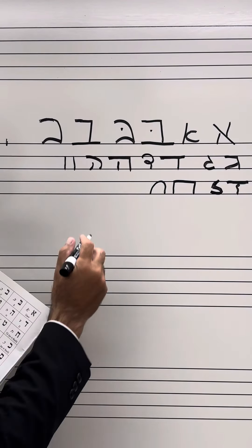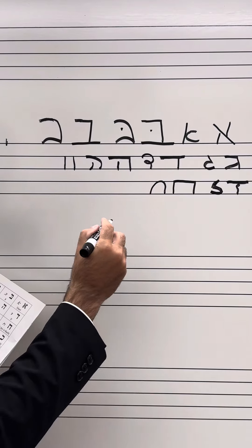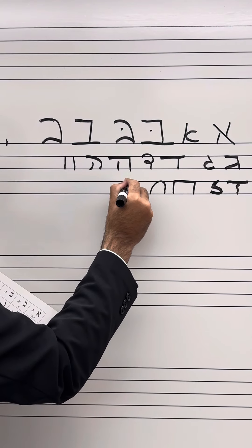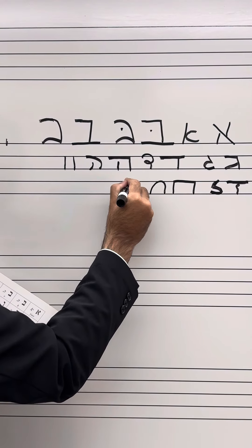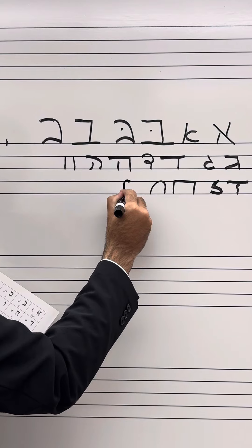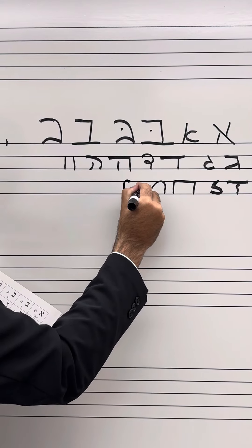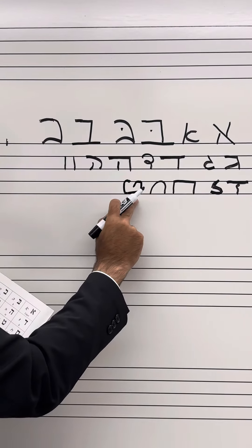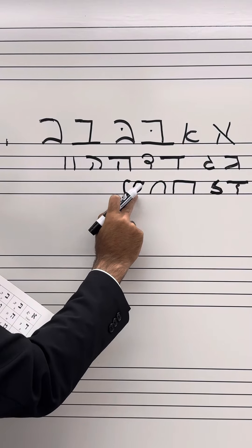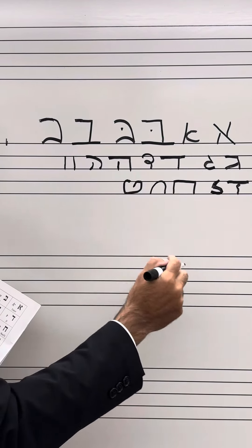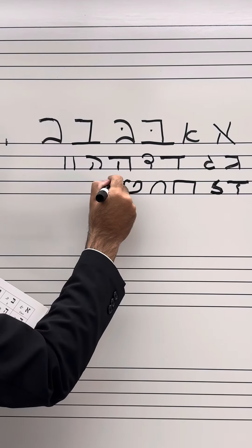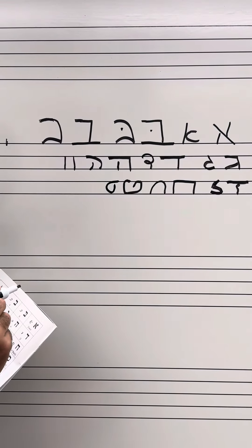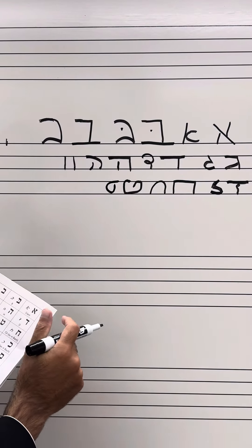Next we have the Tet. The Tet in block capitals appears like this, coming over and down like that — that is generally how the Tet looks in the Torah or in a Siddur. In script it's more cursive, it just comes in like that and goes on like that. That's usually how the Tet looks.